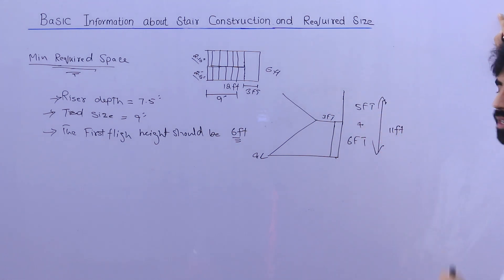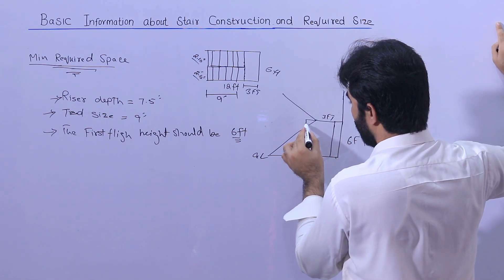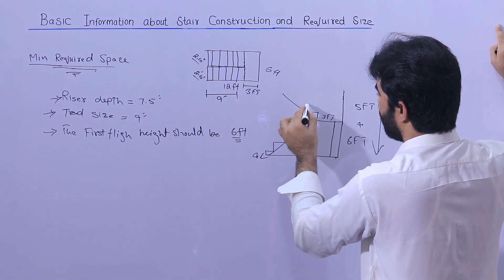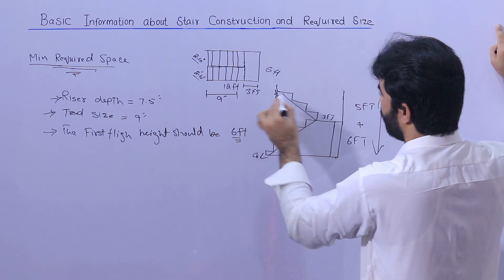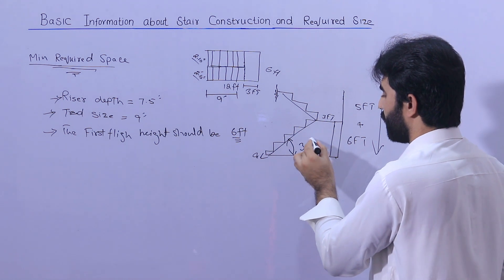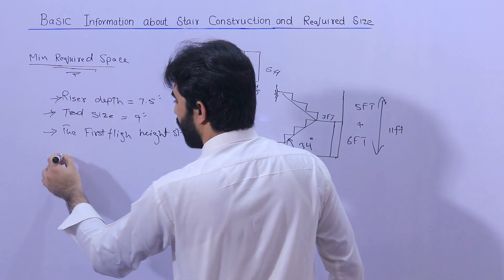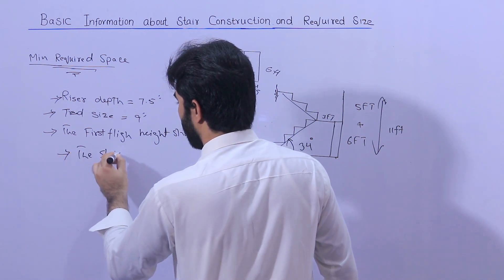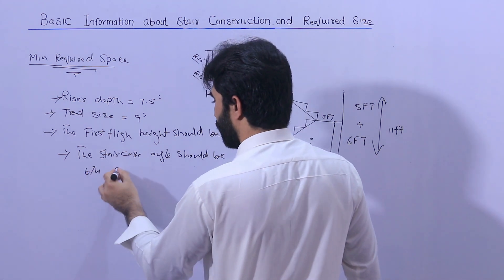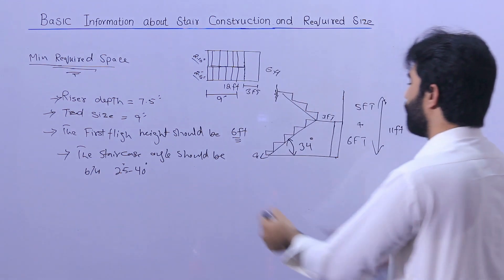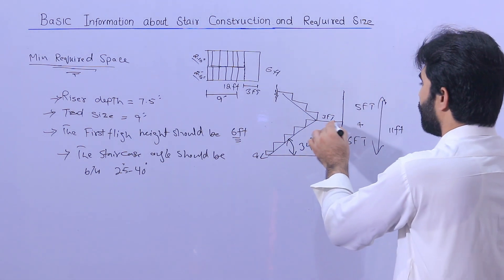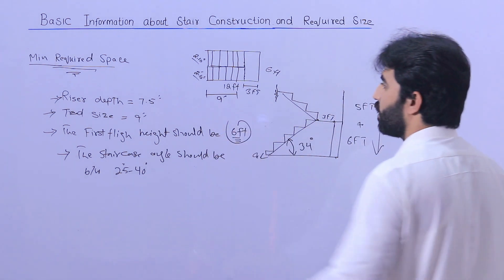So 6 plus 5 becomes 11 feet total, as you can see. The riser is 7.5 inches and the tread is 9 inches. The staircase angle should be between 25 to 40 degrees — here we have 32 degrees, so it is acceptable. The minimum landing is 3 feet and the first flight you can keep at 6 feet.